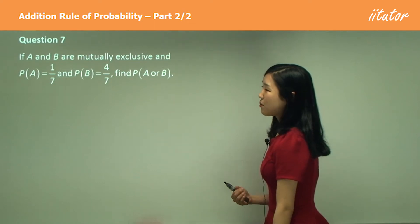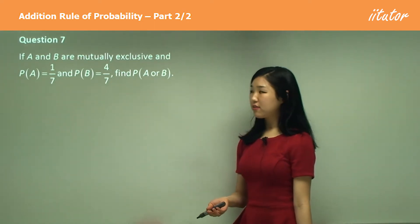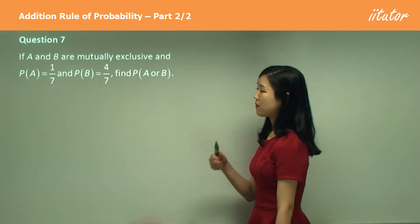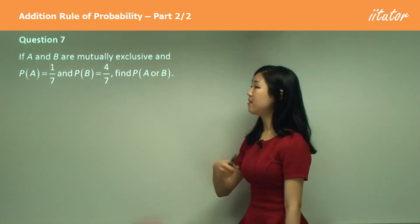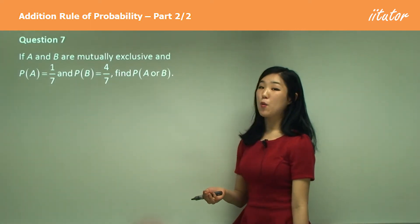Okay, if A and B are mutually exclusive and they give you the probability of A and probability of B, they want us to find the probability of A or B.